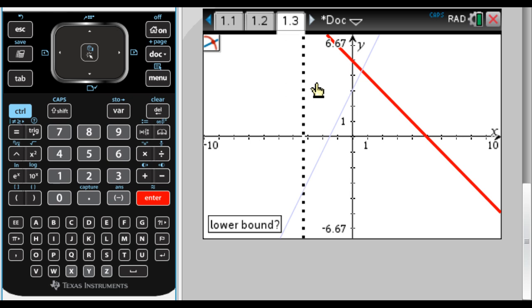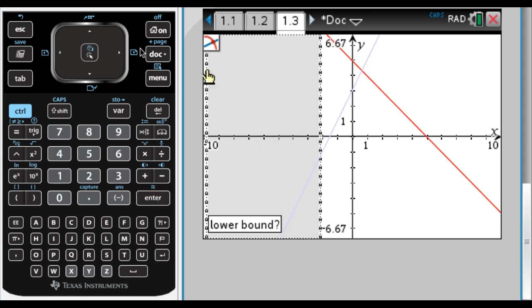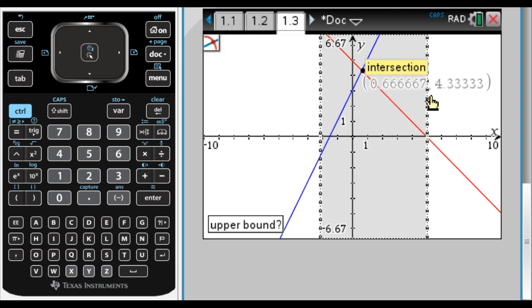To use the Intersection tool, it's asking for a lower bound. That just means be to the left of the intersection point. So I'm to the left of that, I'm going to click once. And now I need an upper bound, which means be to the right of the intersection point. So when I get to the right of it, you can see it's popping up there.